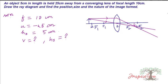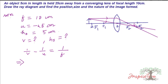Using the lens formula: 1/v minus 1/u equals 1/f. Rearranging, 1/v equals 1/f plus 1/u.